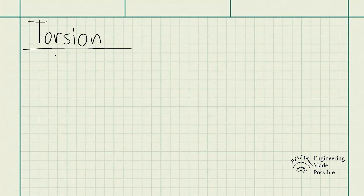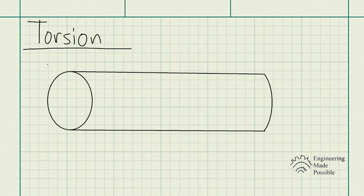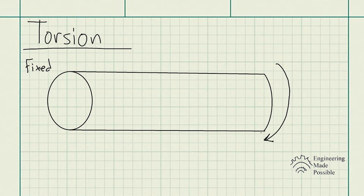Today we'll be going over torsion. What torsion is essentially is when you have a rod or a shaft and a torque is being applied to the shaft causing it to want to rotate. This is where you have torsion, and the main application for this is whenever you want to transfer power, usually through a drive shaft.